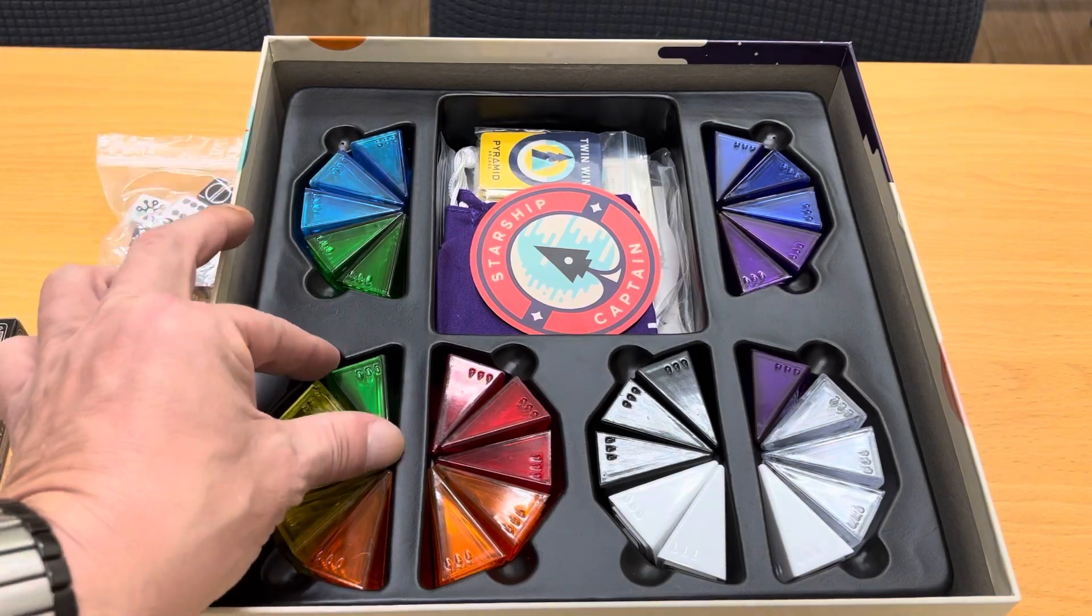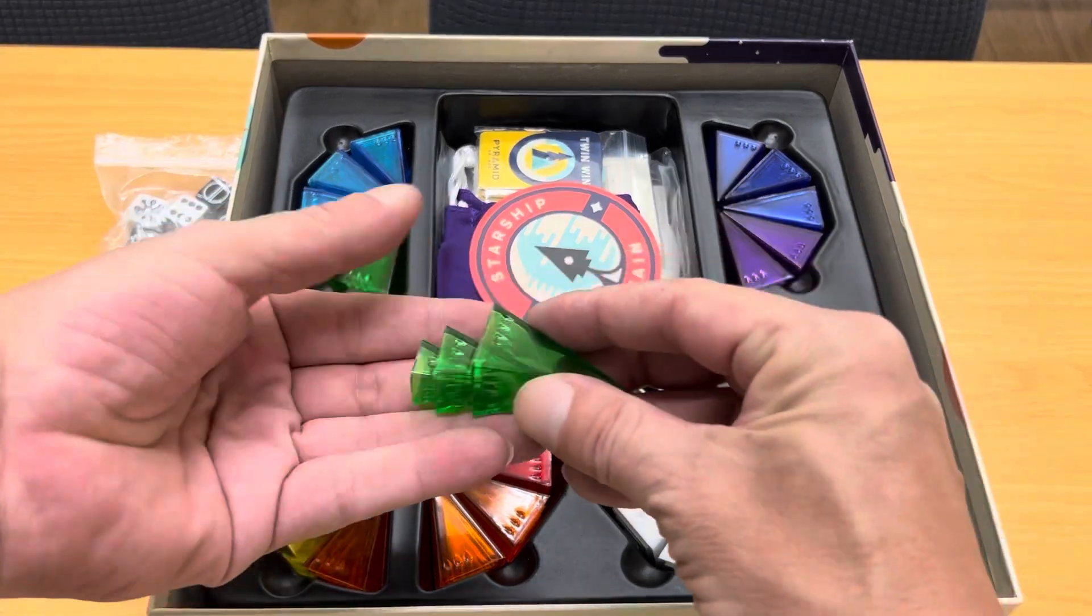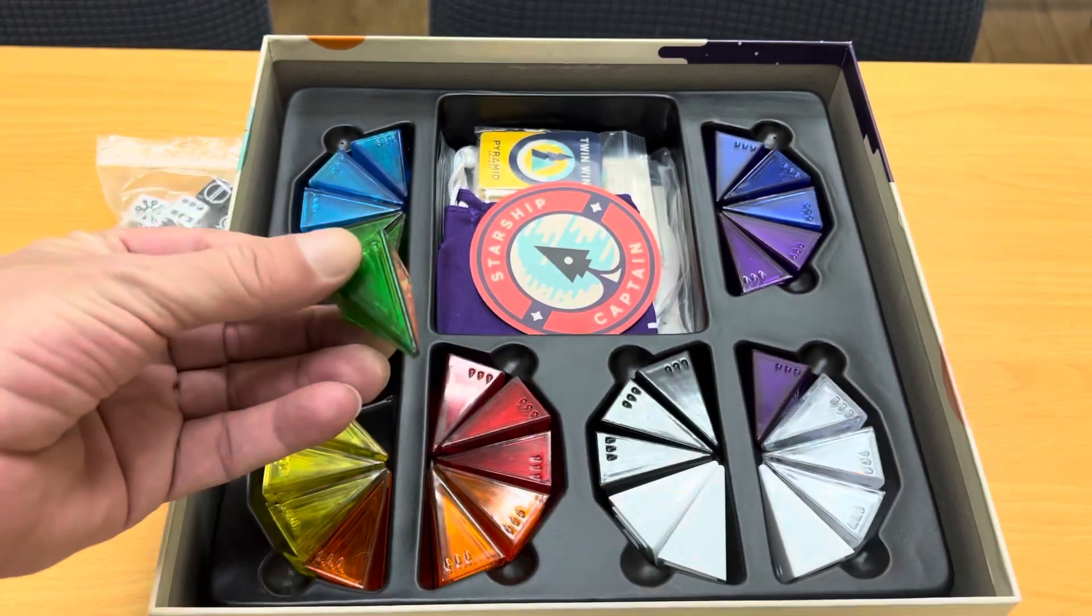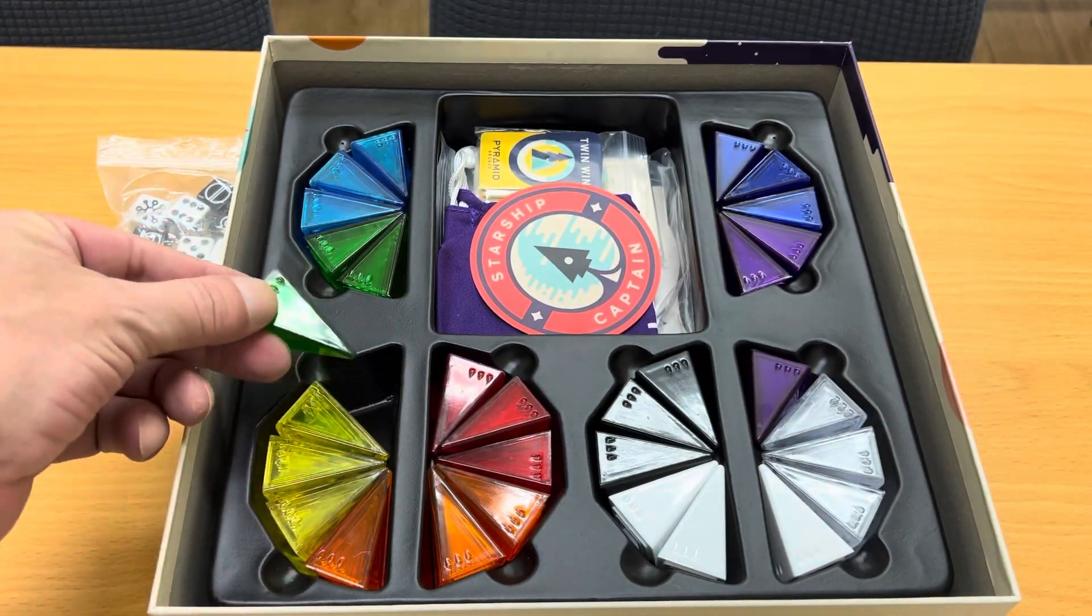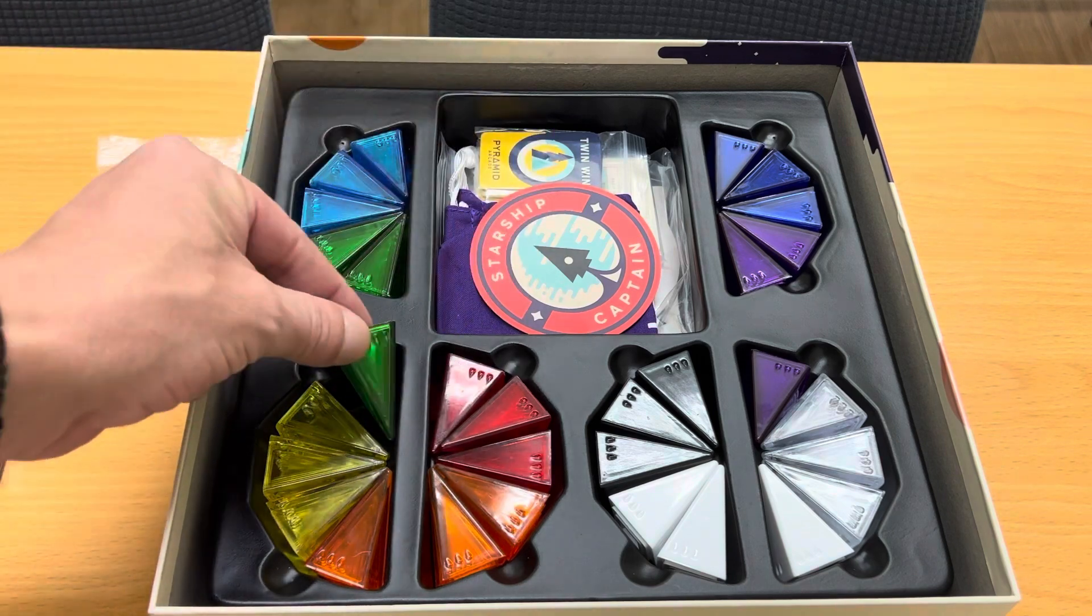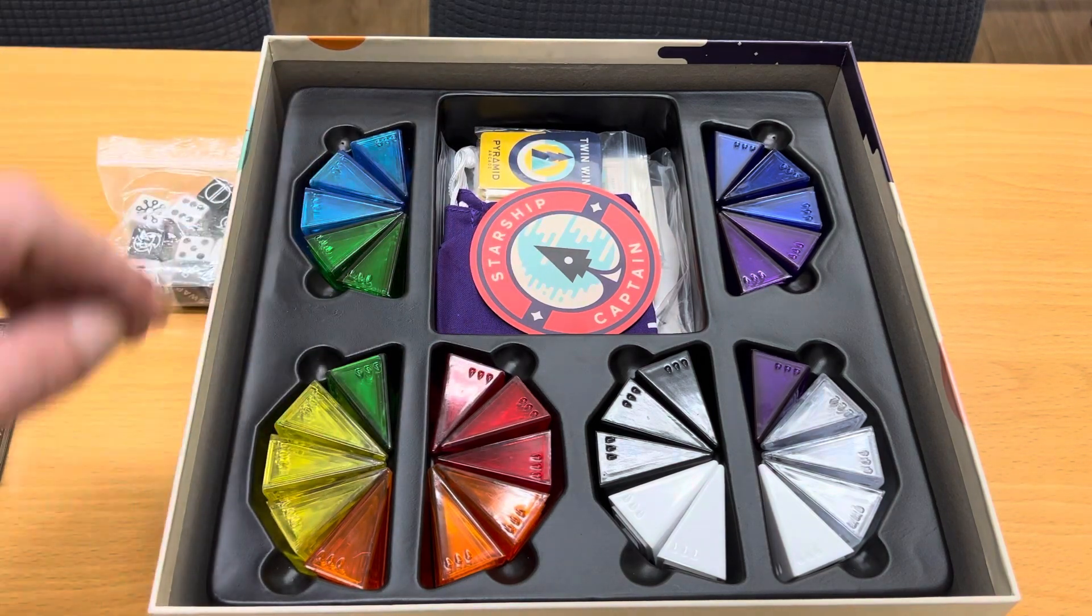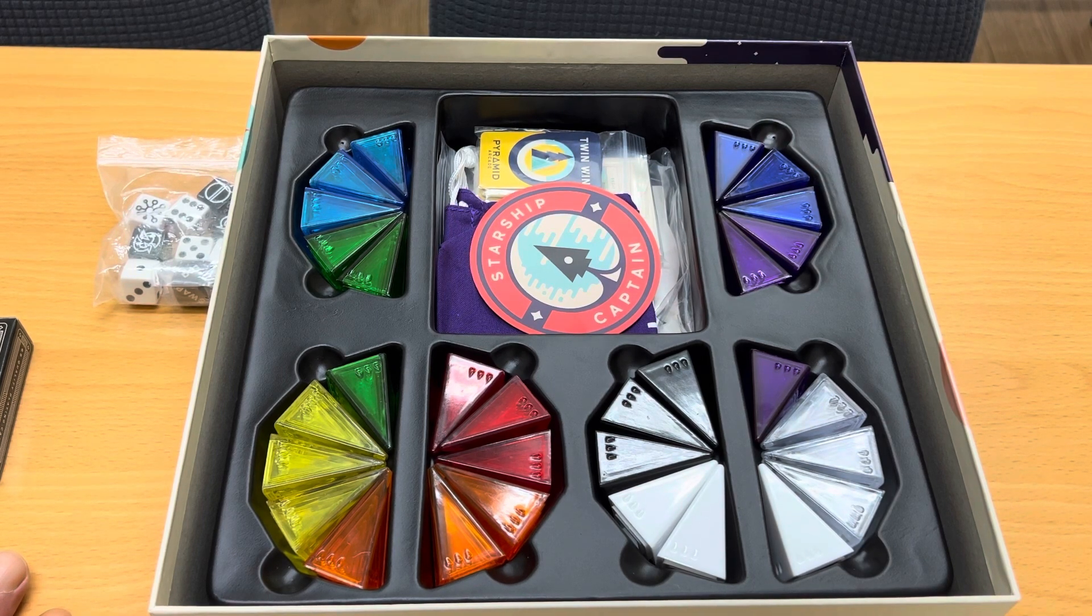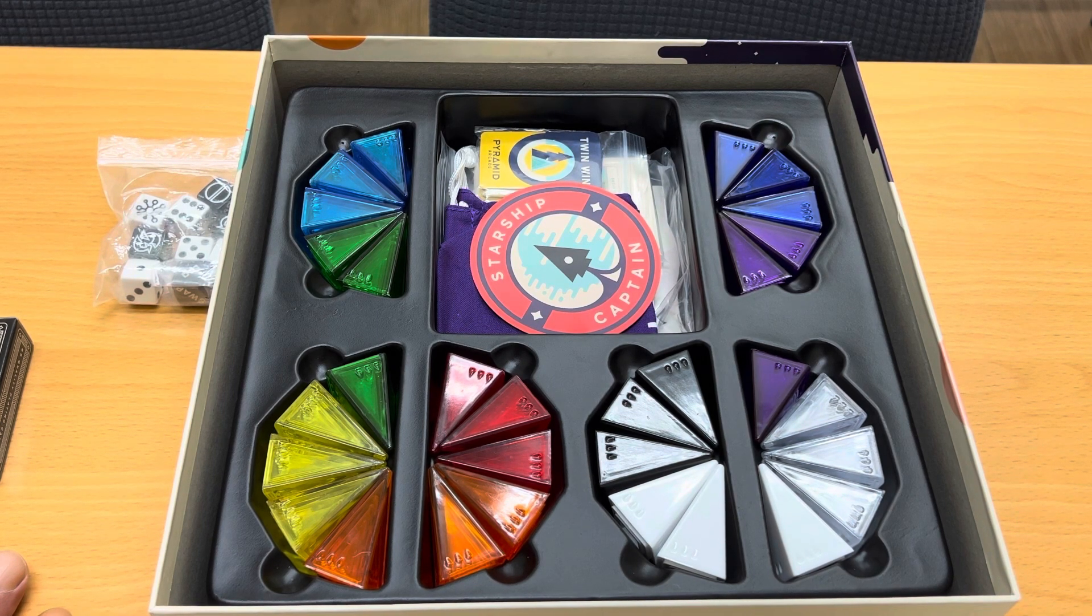But the key component of this entire set are these unique pyramid pieces. And there are sets of three. You have a small, medium and large in each of ten colors, and three sets of each. So nine greens, nine blues and so on, totaling 90 pieces. Let's take some out and I'll show you how to play a few games.